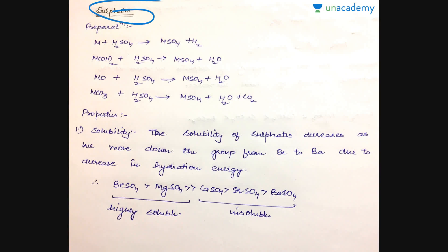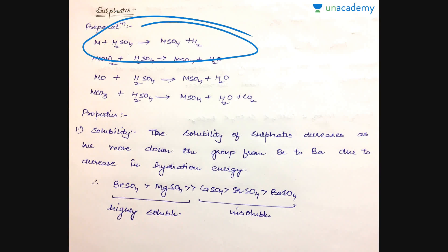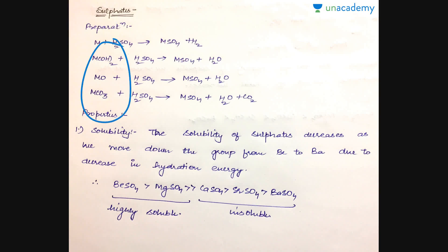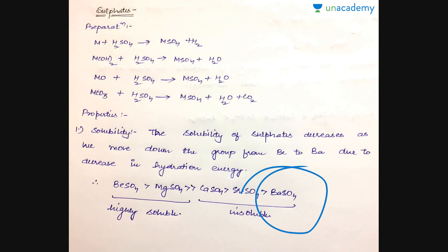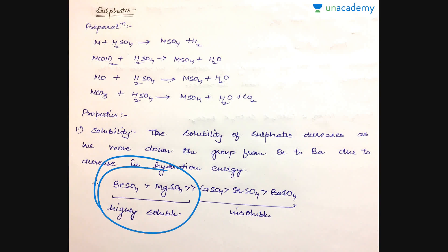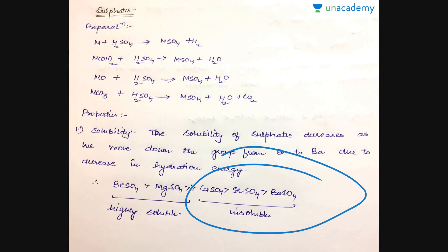Next are the sulfates. Sulfates are prepared by treating the metals with sulfuric acid; similarly, metal oxides, carbonates, or hydroxides can be treated with sulfuric acid to form the corresponding metal sulfate. Regarding solubility, as we move down the group the solubility decreases due to decrease in hydration energy caused by the increasing size of the cation. Beryllium sulfate (BeSO4) and magnesium sulfate (MgSO4) are highly soluble, whereas calcium sulfate, strontium sulfate, and barium sulfate are insoluble.